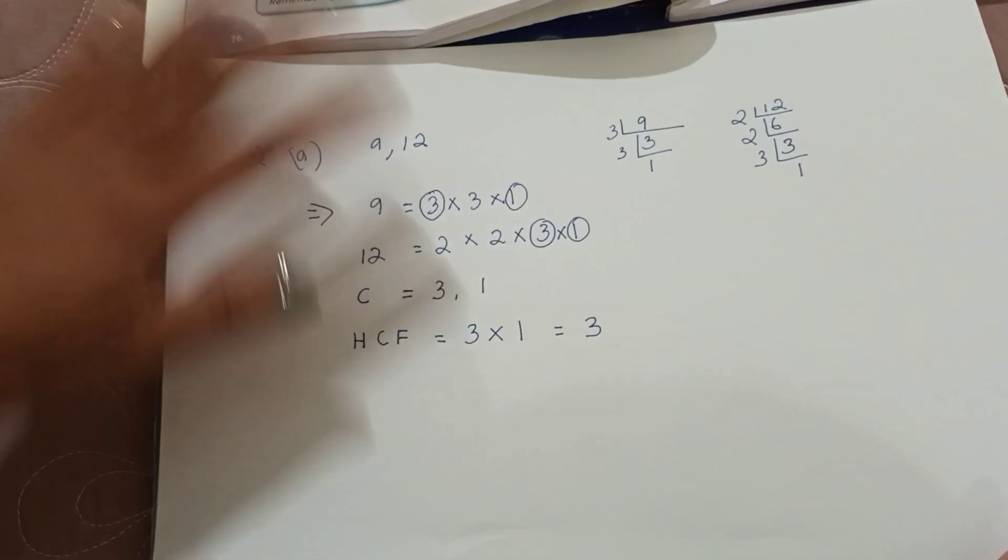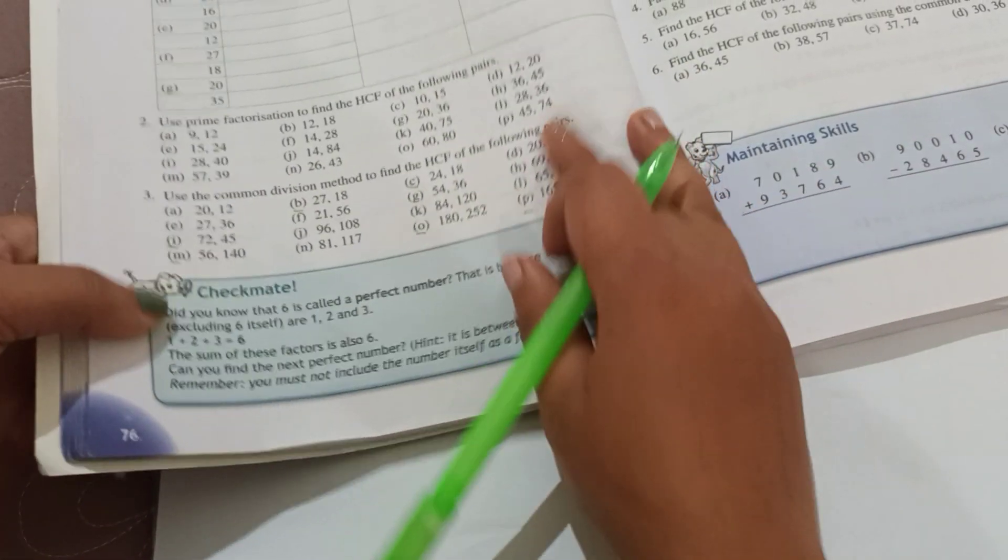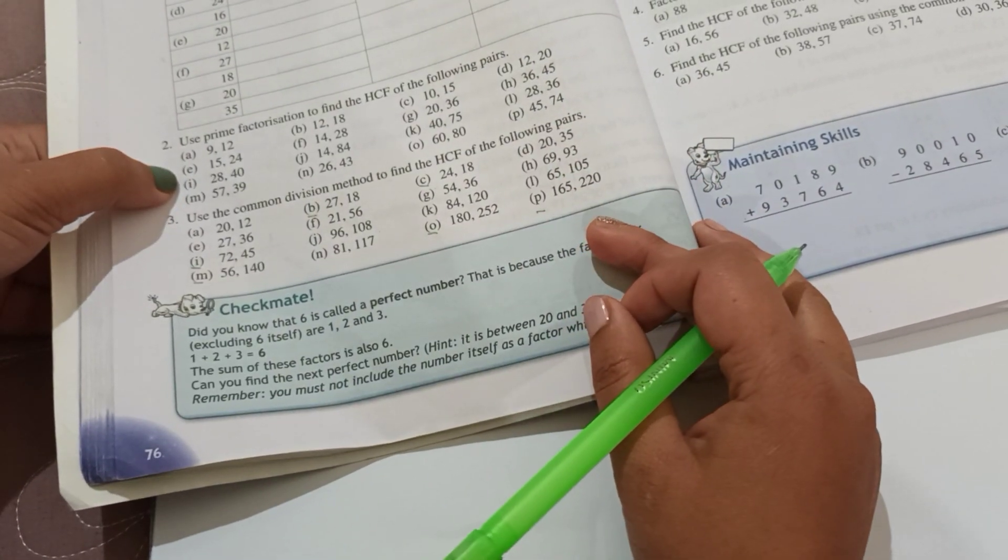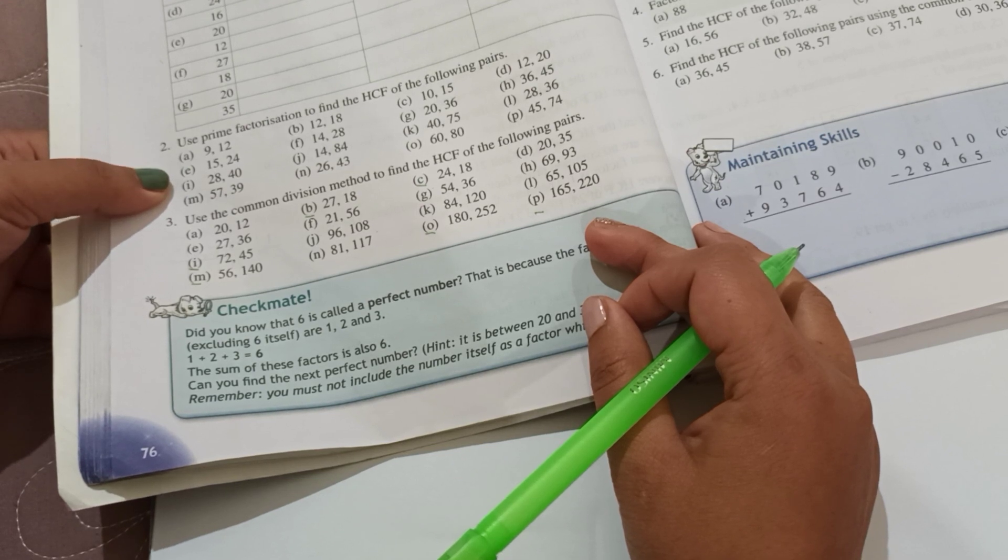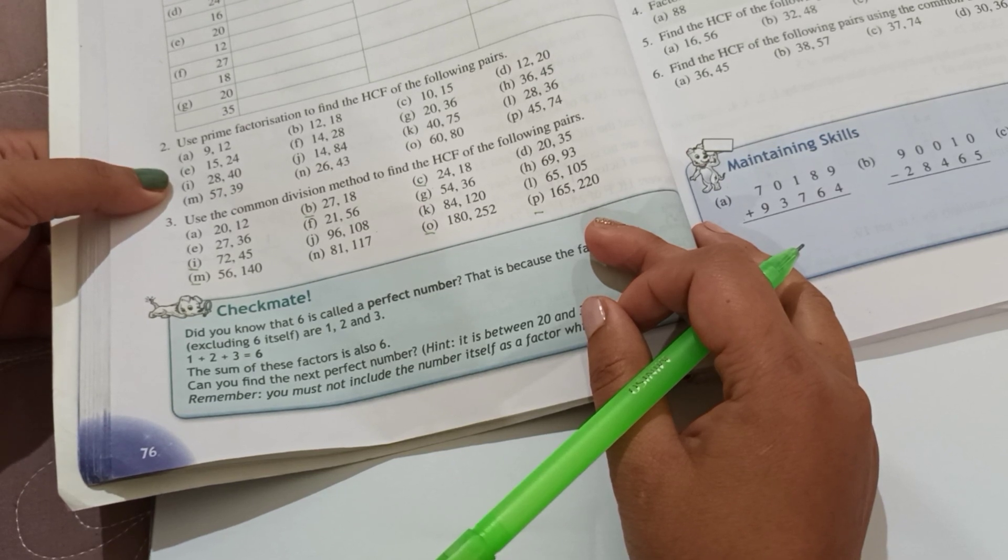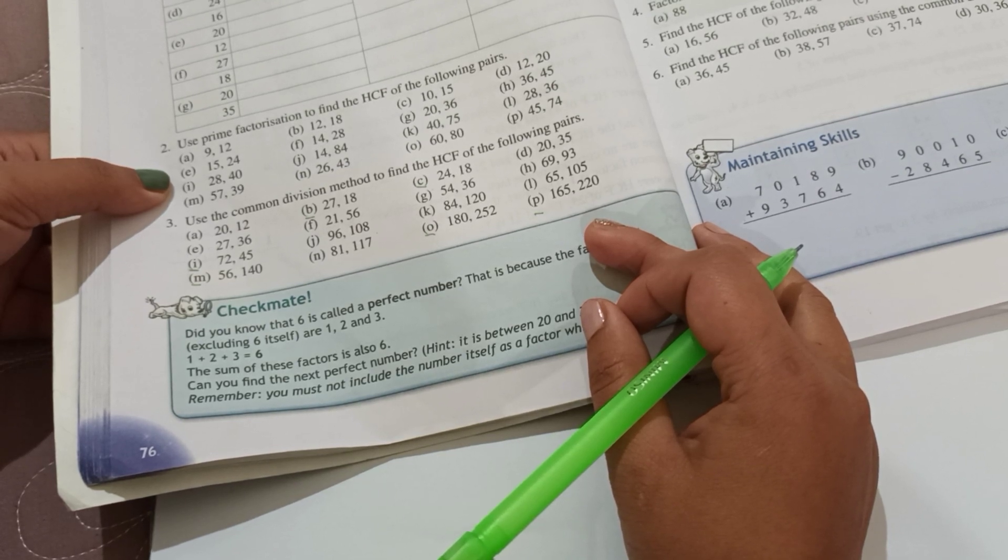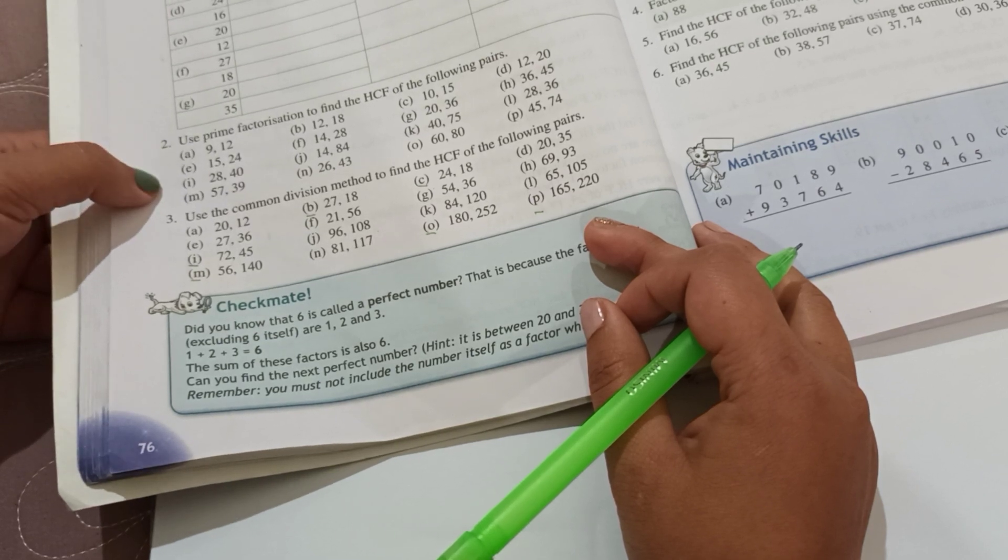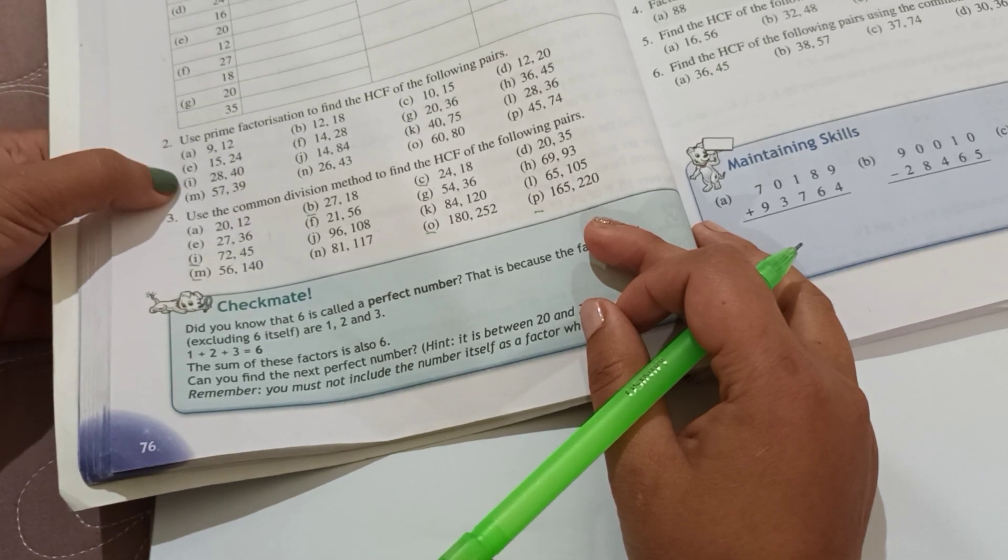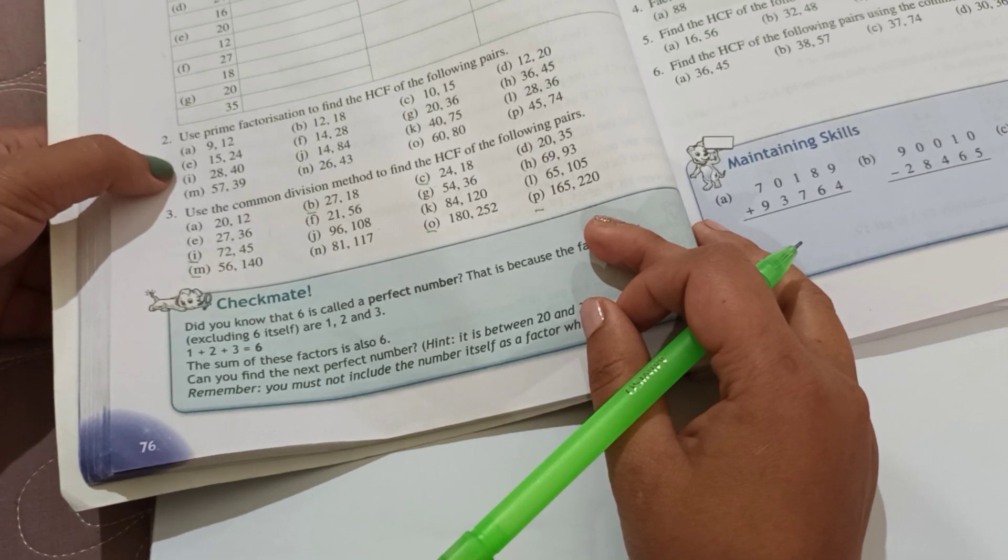So question number 1 is done. In the exam, you check the textbook and write the answer. Next class, next class, we will revise again on Friday. Next class we will revise again and check the answers. Question number 2 you can try yourself and write.